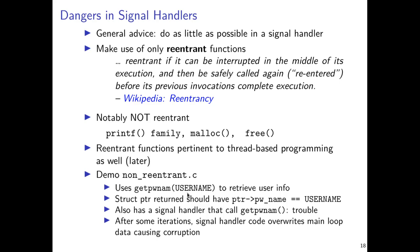The getpwnam function doesn't reveal any unsafe password information — it either only lets you ask about yourself or returns dummy information for others. Importantly, this function will return a struct of some kind. Due to the way getpwnam is implemented — a standard Unix quasi-system call — it has all sorts of trouble when called in signal handlers or in mixtures thereof. If we apply enough pressure to this code, it breaks due to its non-reentrancy.